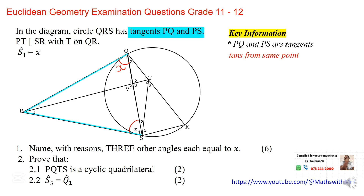That is what we have been able to establish. Apart from that, if you take the chord here and one of the tangents, we can see that angle R is an angle in the alternate segment. So that is the tan-chord theorem. We can now see that we have established two angles equal to X using the tangents PQ and PS.